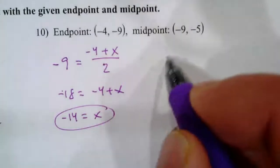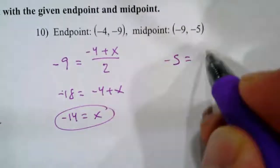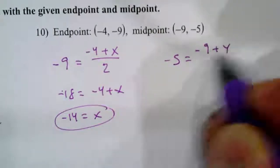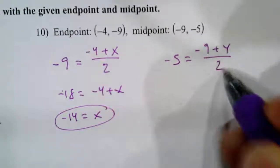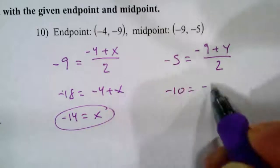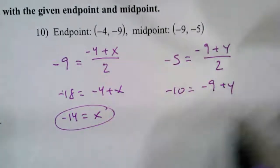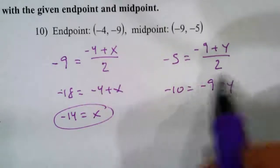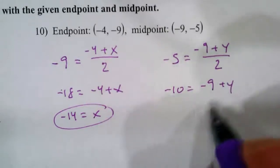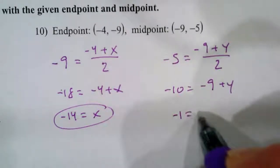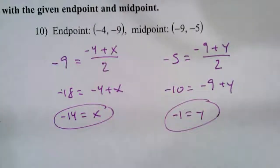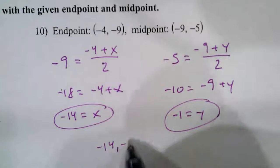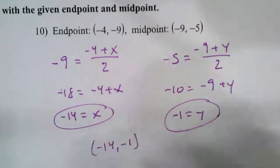Over here we would have negative 5 equals negative 9 plus y over 2. Multiply both sides by 2: negative 10 equals negative 9 plus y. Add 9 to both sides: negative 1 equals y. So our new pair of coordinates would be negative 14, negative 1.